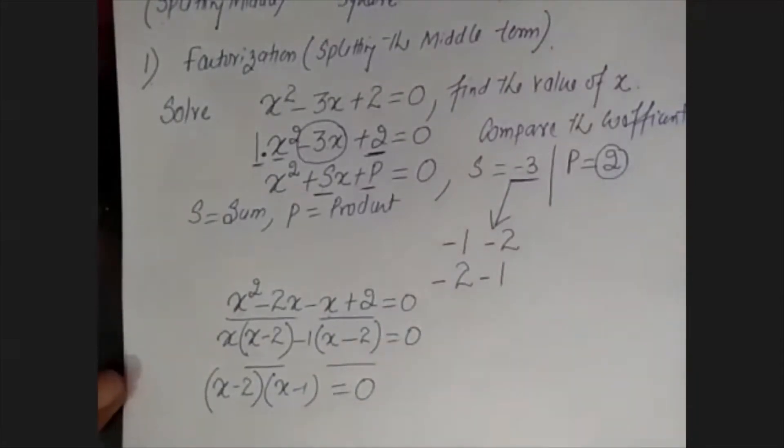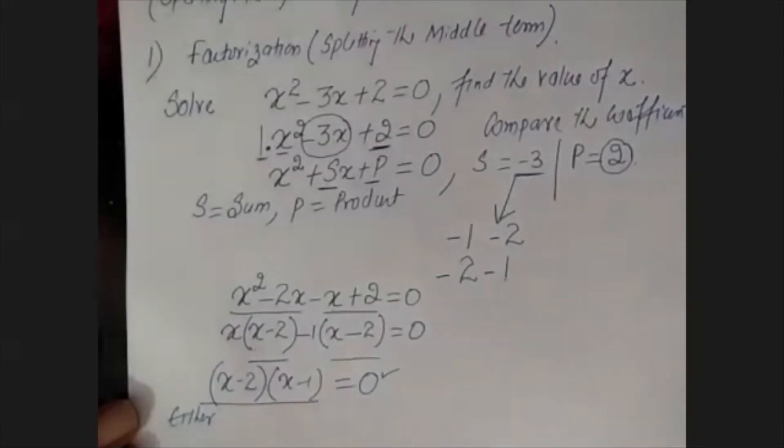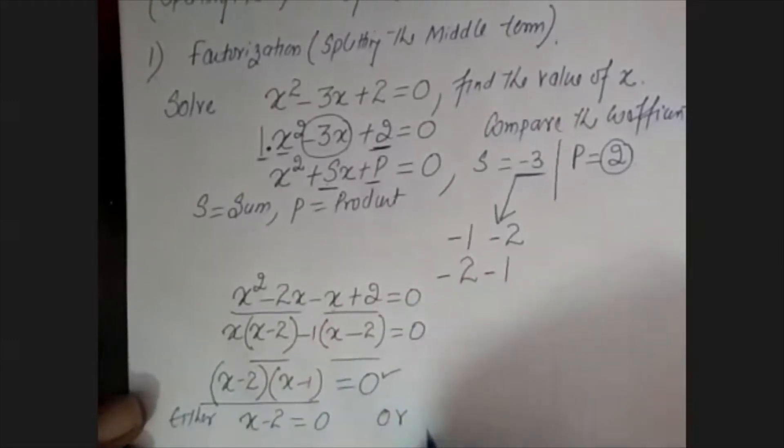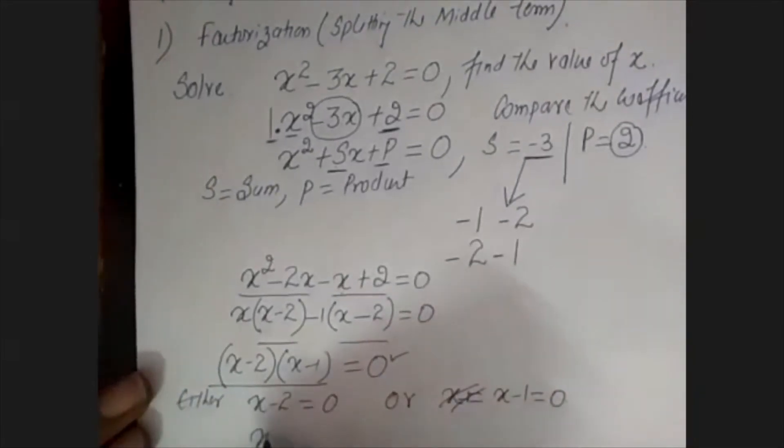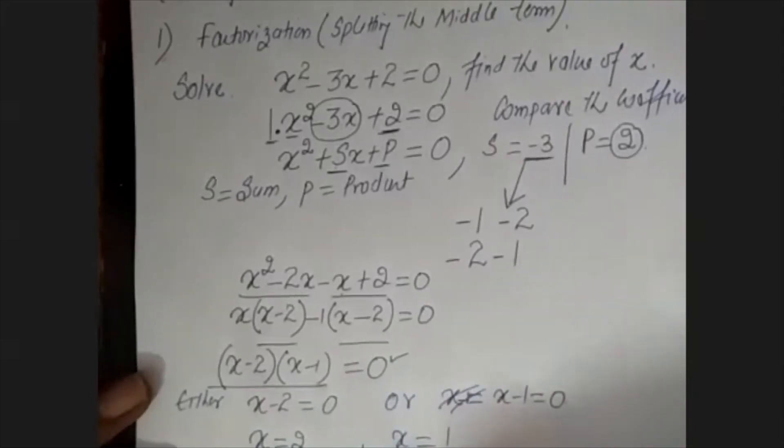Now I will convert this equation. I have two factors, that's why we call it factorization. Now what will be the solution? The concept is that the product equals zero, so either this term equals zero or this term equals zero. So the answer is x = 1 and x = 2. This is the solution and this is the answer.